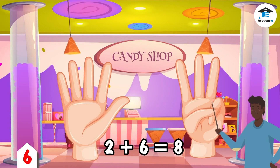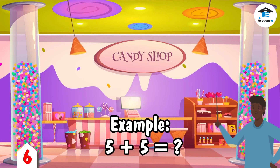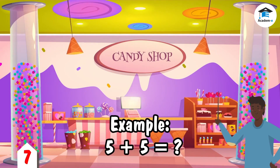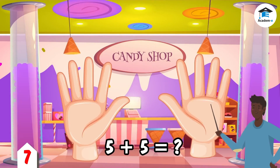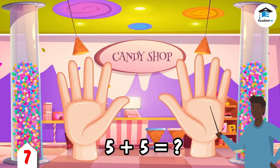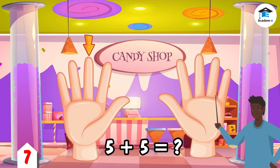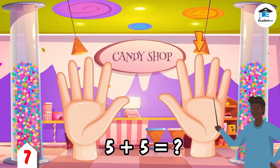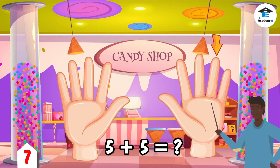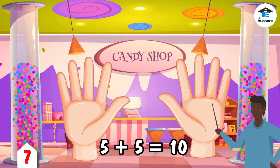Did you get it? Let's have another example. Show 5 fingers and add another 5 fingers. Let's count them all — ready: 1, 2, 3, 4, 5, 6, 7, 8, 9, 10. The sum of 5 and 5 is 10.